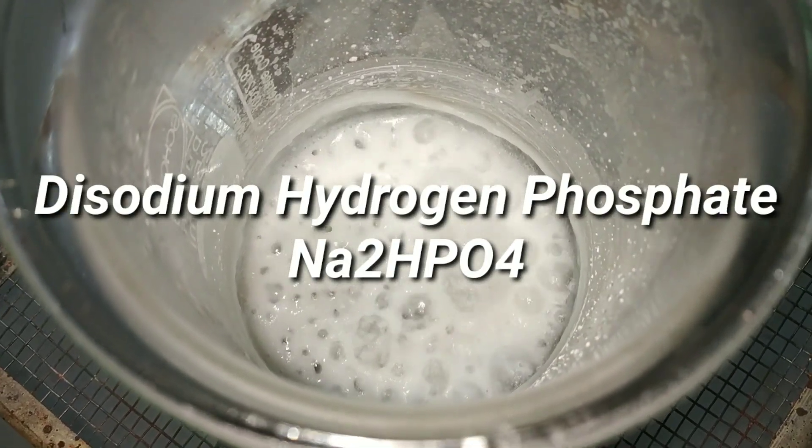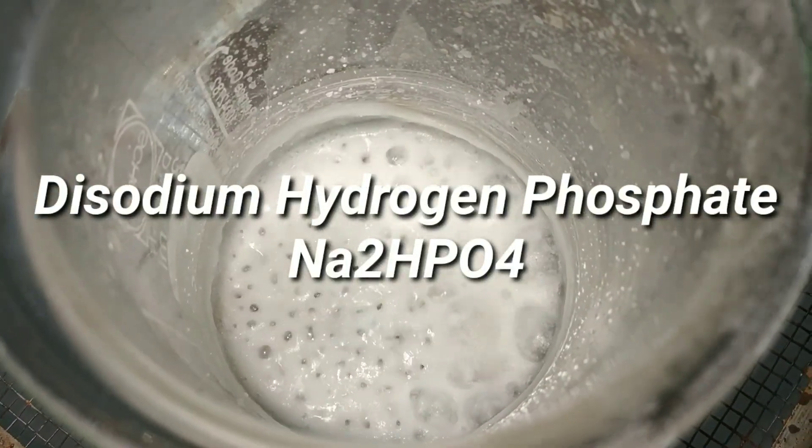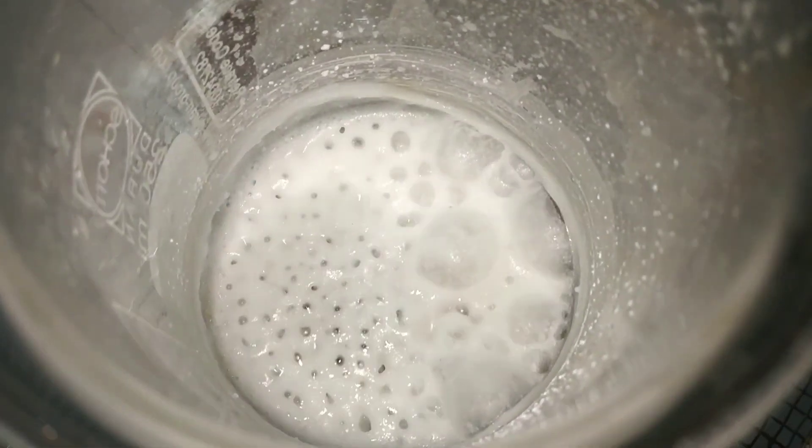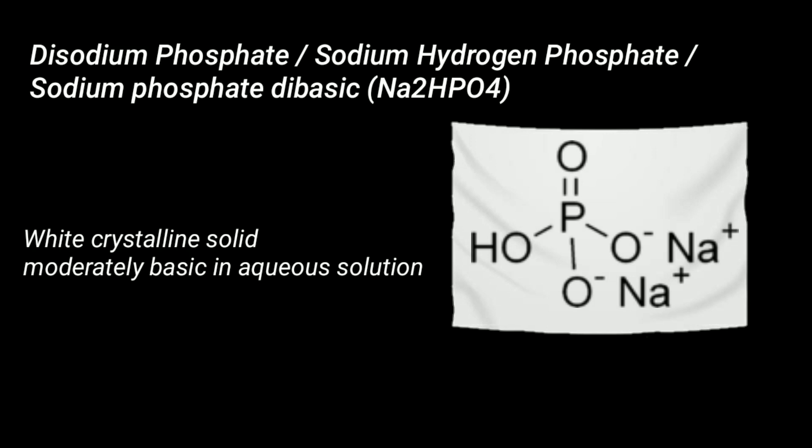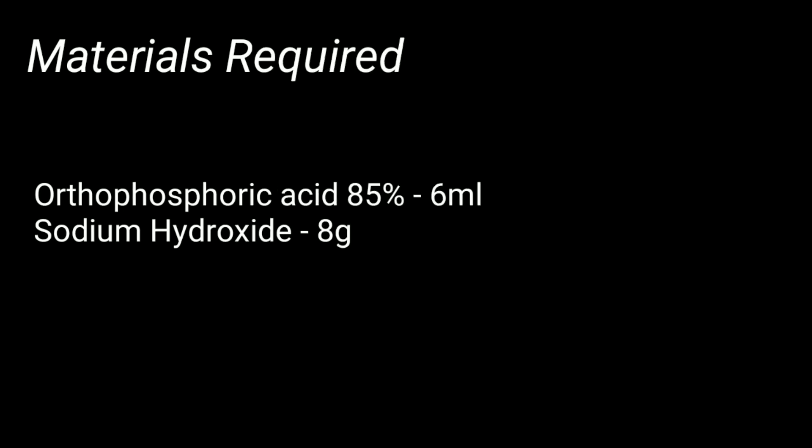Friends, in this video we will make disodium hydrogen phosphate and see some of its chemical reactions. Disodium hydrogen phosphate, known by a variety of names, has the chemical formula Na2HPO4. The preparation is just a neutralization reaction between orthophosphoric acid and sodium hydroxide.